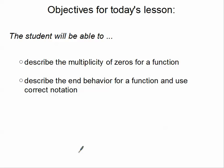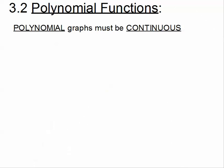Welcome to the first tutorial for this section. We're going to look at the first objective: to describe the multiplicity of zeros for a function. We're in section 3.2 in our textbooks, and we're talking about polynomial functions.